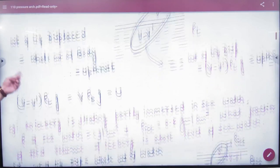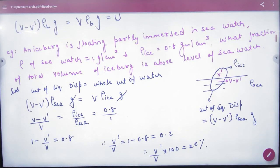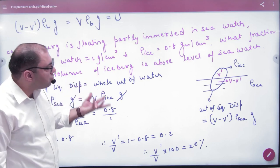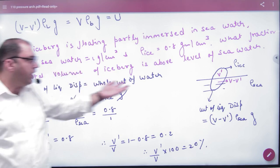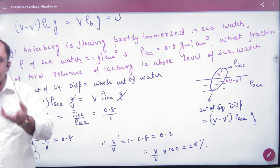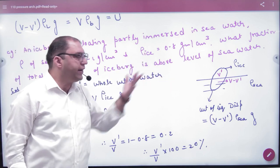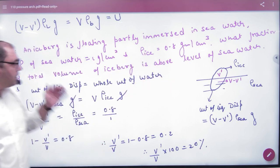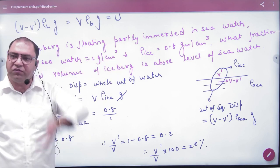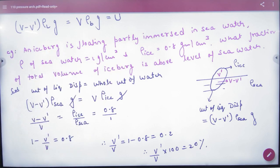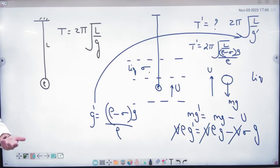So this example of flotation principle. Question is, an iceberg is floating partially immersed in seawater and density of seawater is 1. So seawater density is 1 in CGS. Ice density is 0.8 in CGS. How much fraction of total volume of iceberg is above the level of the seawater? So how much fraction is above seawater, you have to calculate.